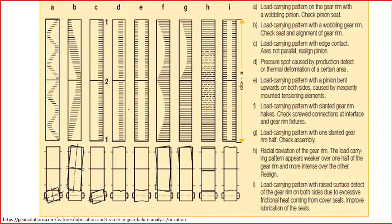These slides show how the gear surface will look due to various errors. For example, 'A' shows the load carrying pattern on a gear rim with a wobbling pinion — in that case, check the pinion seat. 'B' shows load carrying pattern with a wobbling gear rim. Pattern 'D' shows a pressure spot caused by a production defect or thermal deformation — darker lines indicate high frequency contact or high contact stress. These patterns help identify what kind of problem may exist.